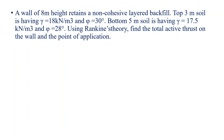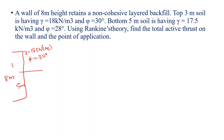The first problem is a wall of 8 meter height. The top 3 meters of soil has a unit weight of 18 kN per meter cube. The bottom 5 meters has a friction angle of 30 degrees and unit weight of 17.5 kN per meter cube, with friction angle 28 degrees.